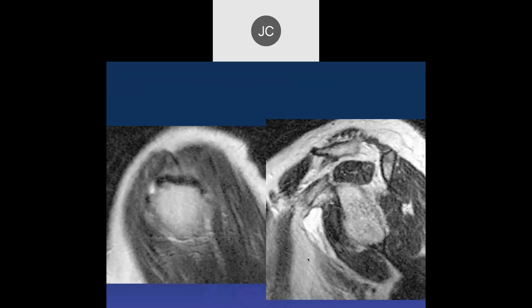We have axial and sagittal views — both sagittals actually. There's a focus of increased signal in the supraspinatus, indicating a tear at the anterior insertion, which is a common location. There's also a fluid collection — a bursal fluid collection anterior to the subscapularis. If we were more superior, it'd be the subscapularis recess, but this is the subcoracoid bursa.